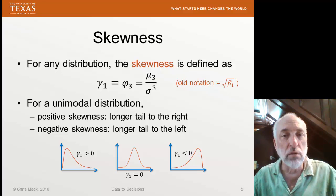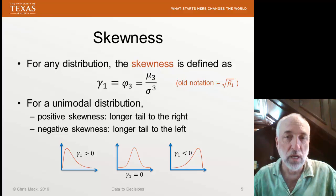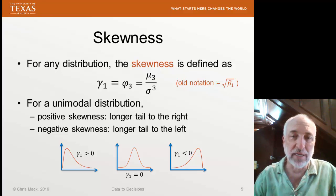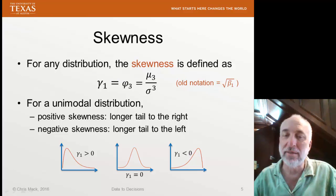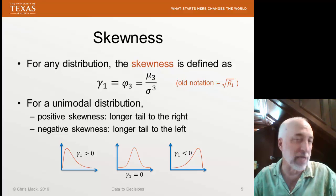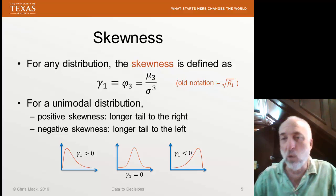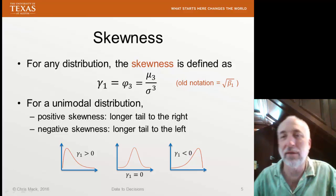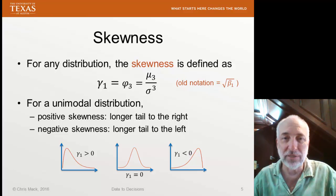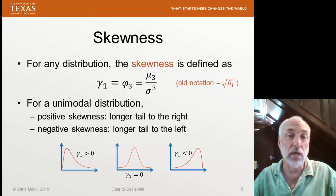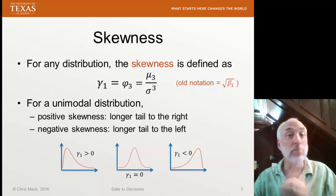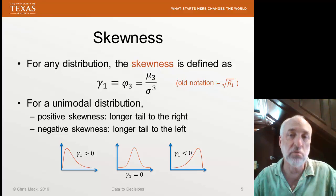We're going to look at the third standardized moment and call it the skewness of our distribution. Even though generically I use the symbol phi_3 for the third standardized moment, we'll call it gamma_1 here, because that's the standard terminology in statistics. Old notation was the square root of beta_1, but we use gamma_1 now. So gamma_1 means skewness, and it's nothing more than the standardized third centered moment.